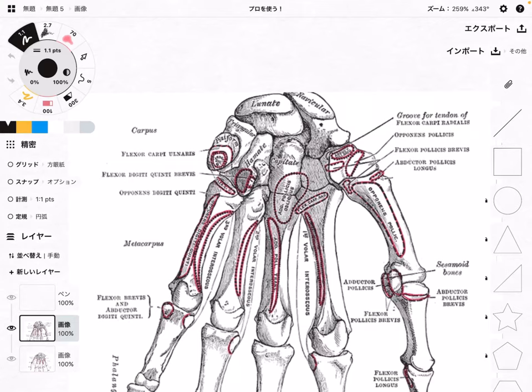In this video, I am going to explain the anatomy of carpal bones. You know there are eight carpal bones in our wrist, and I'm going to explain the anatomy of each carpal bone and related tissues.